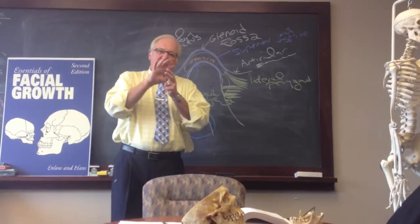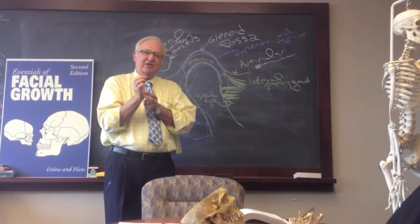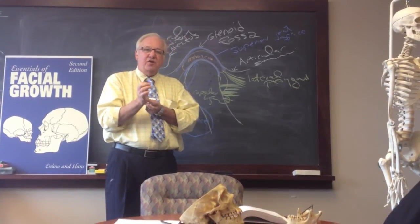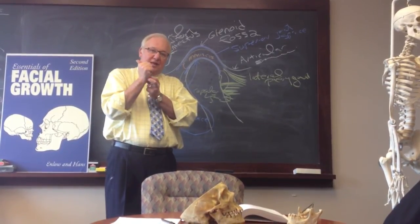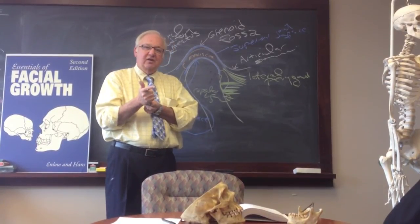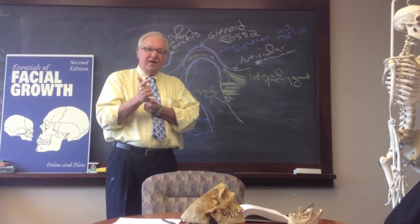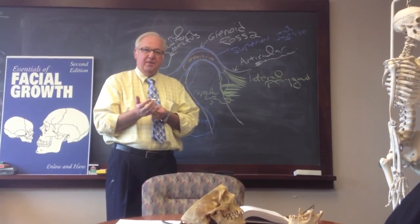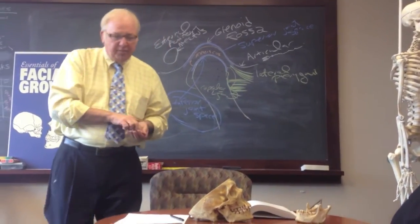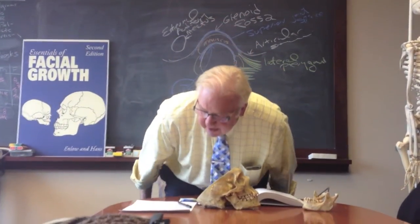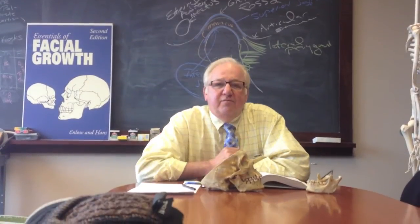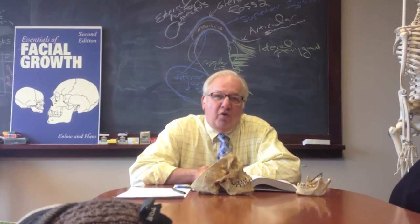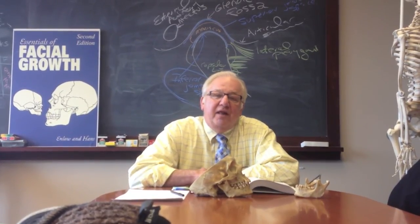It's important to understand these two concepts because when we diagnose temporomandibular joint problems, we often use lack of rotation or lack of translation as diagnostic criteria to determine when the temporomandibular joint is not working normally. I hope this helps explain the growth and function of the TMJ. The book has more detailed information, so go to the book to fill in the gaps.